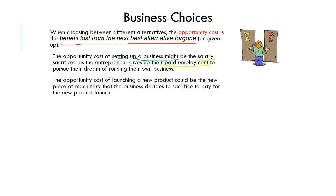Another example: the opportunity cost of launching a new product could be the new piece of machinery that the business decides to sacrifice to pay for the new product launch. So again, the decision was to launch a new product. The next best alternative was the new piece of machinery, and the value they would have got from that machinery is effectively the opportunity cost — what they've sacrificed by choosing to launch a new product.